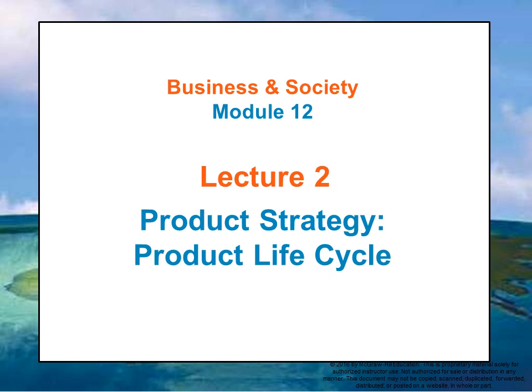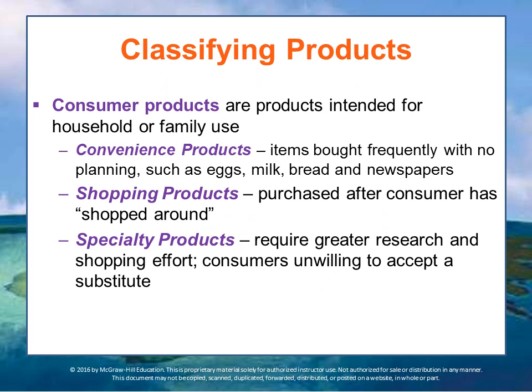Let's talk now about product life cycle. Products are usually classified as either consumer products or industrial products. Consumer products are for household or family use; they are not intended for any purpose other than daily living.